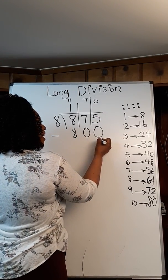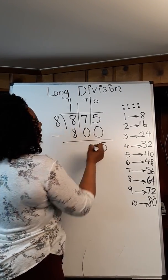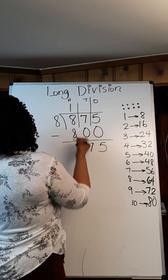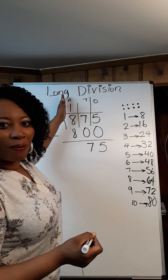Now let's subtract. Five takeaway zero is five. Seven takeaway zero is seven. Eight takeaway eight is zero. Now we're done with the hundreds place.